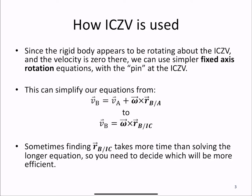Because the rigid body appears to be rotating about the ICZV as if it were a pin, we can use simpler fixed axis rotation equations rather than the full relative motion equations if we utilize the ICZV. This can simplify our equations.